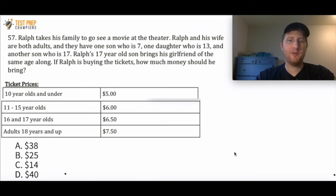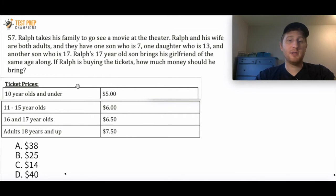Ralph takes his family to see a movie at the theater. Ralph and his wife are both adults. They have one son who is 7, one daughter who is 13, and another son who is 17. Ralph's 17-year-old son brings his girlfriend of the same age along. If Ralph is buying the tickets, how much money should he bring? Ticket prices: 10 and under is $5, 10 to 15 is $6, 16 and 17 is $6.50, and adults 18 and up is $7.50.